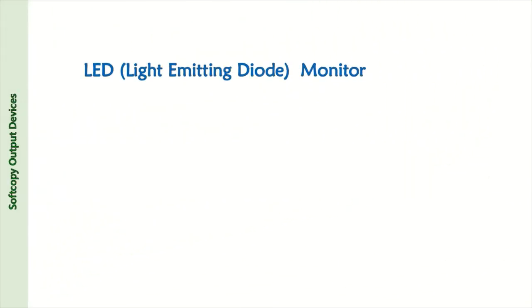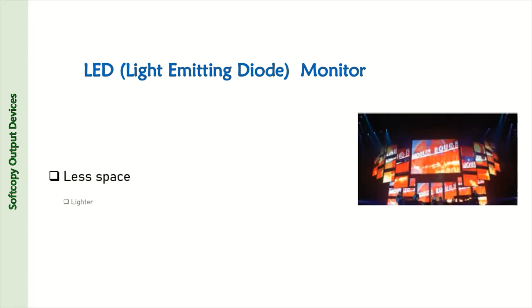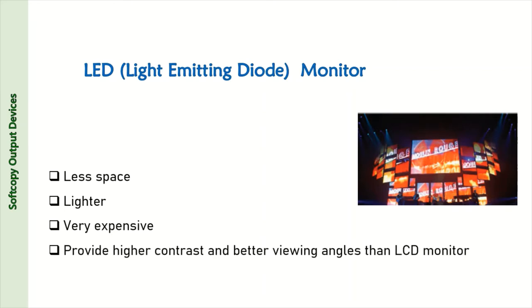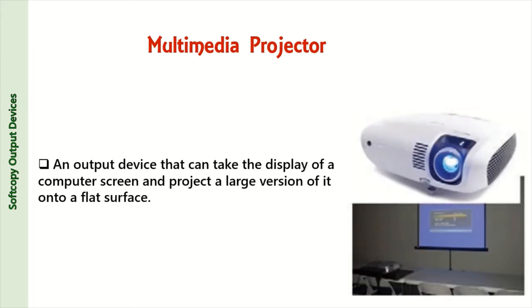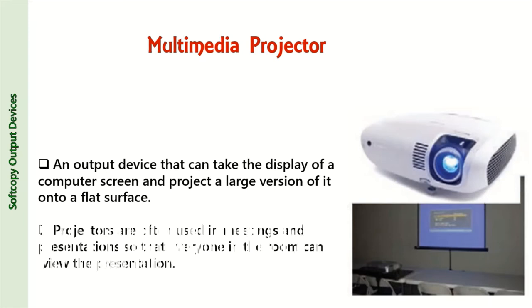LED — light emitting diode monitor: requires less space, is lighter, and is very expensive. It provides higher contrast and better viewing angles than LCD monitors. Multimedia projector: an output device that can take the display of a computer screen and project a large version of it onto a flat surface. Projectors are often used in meetings and presentations so that everyone in the room can view the presentation.